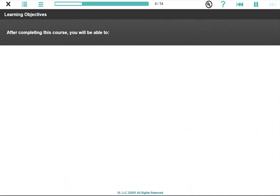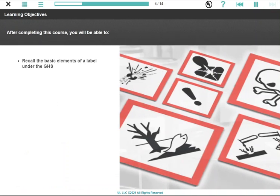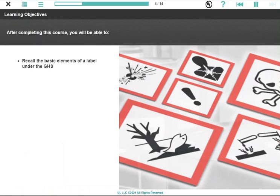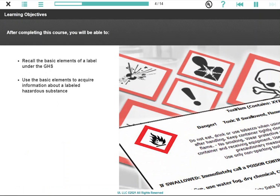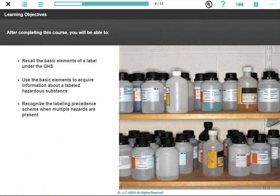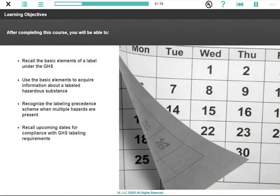After completing this course, you will be able to recall the basic elements of a label under the GHS, use the basic elements to acquire information about a labeled hazardous substance, recognize the labeling precedent scheme when multiple hazards are present, and recall upcoming dates for compliance with GHS labeling requirements.